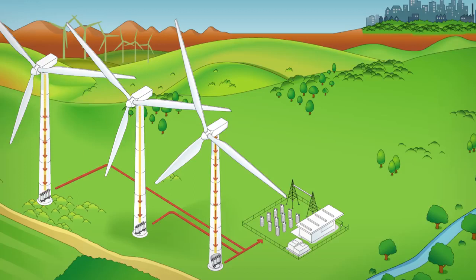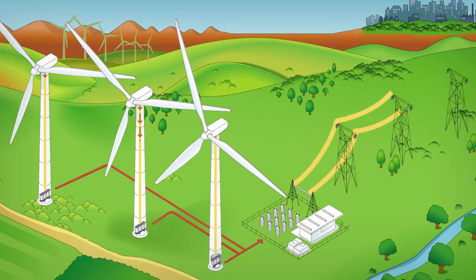From each turbine, alternating current is sent to the substation through underground cables. Here, the voltage is increased again to feed it into the power grid and transport it to end consumers.